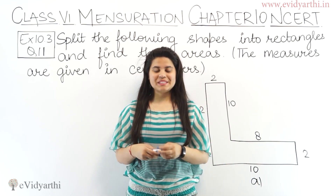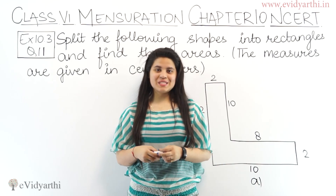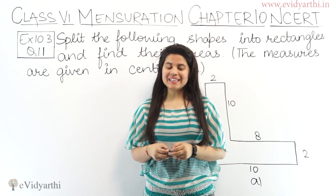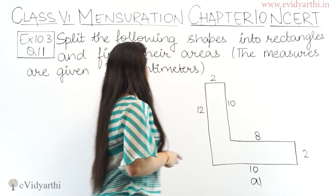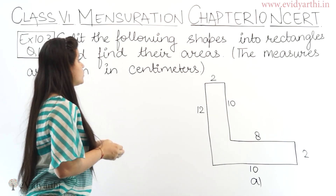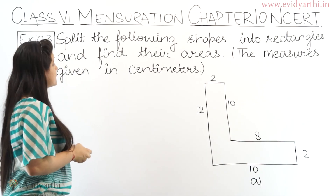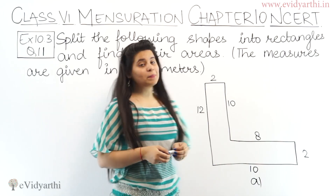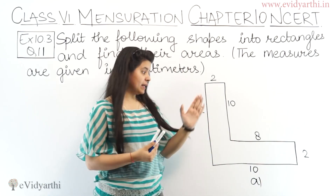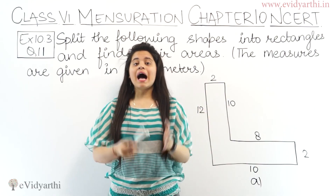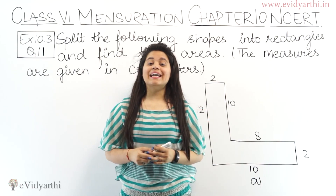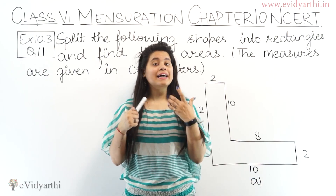Hello everyone, this is Mansi Fongni with Adi George, and now we are starting with question number 11, exercise 10.3. In this question we have to split the following shapes into rectangles and find their areas. Like last question, we have figures given, and you have to break them into different rectangles and then find their area.